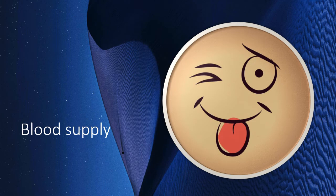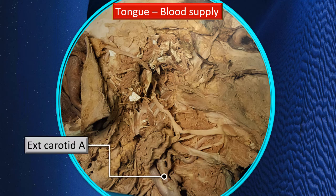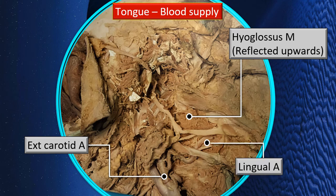For blood supply, the lingual artery — a branch of the external carotid artery — is the artery of the tongue. While smaller contributing arteries may exist, for undergraduate purposes the lingual artery is the key answer. It has been seen in several stages of dissection, particularly deep to the hyoglossus muscle.